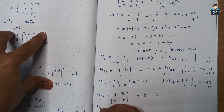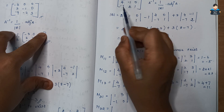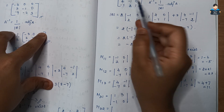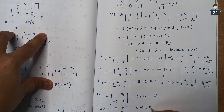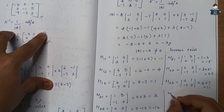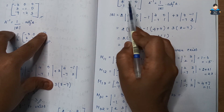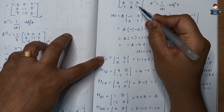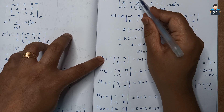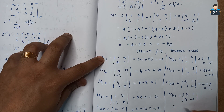M32: omitting row 3 and column 2 — submatrix [2, 3; 4, 0] gives 0 minus 12 = minus 12. M33: omitting row 3 and column 3 — submatrix [2, 1; 4, −1] gives −2 minus 4 = minus 6. With all minor values computed, we can now find the cofactors.